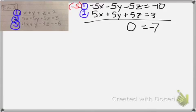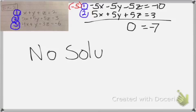Now, does 0 equal negative 7? No, it never equals negative 7. So, whenever you get an equation like this that is just absolutely not true, this is when you say no solution.